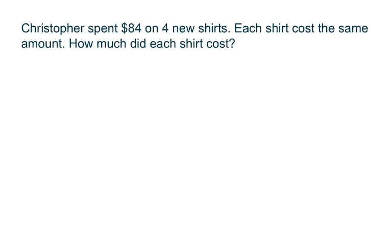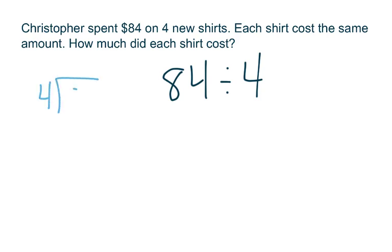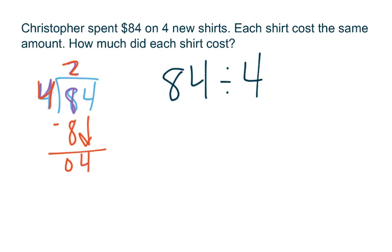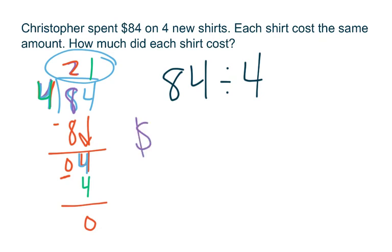Let's move on to our next problem. Christopher spent $84 on four new shirts. Each shirt costs the same amount. How much did each shirt cost? We have a total of $84 that was spent and we're separating that into the cost of four shirts, so we need to do some division. I'm going to use the regrouping method. My first step is to divide 4 into 8 — it goes in 2 times. Then I multiply 4 times 2, that gives me 8. I subtract and I'm left with 0. I bring down my next digit which is 4. I divide 4 into 4 and I get 1. Then I multiply 4 times 1 and I get 4. I subtract and I'm left with 0. So my quotient is 21 — he spent $21 on each shirt.